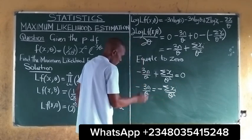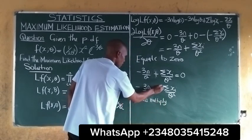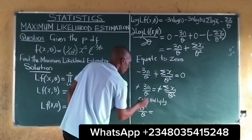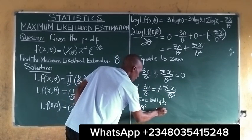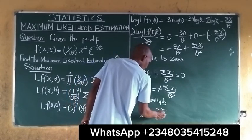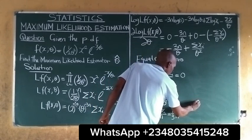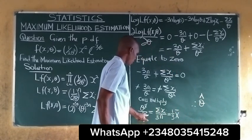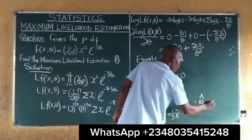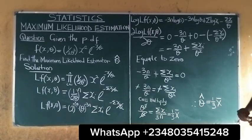The next thing to do is to cross multiply. Cross multiplying, theta squared over theta cancels to give theta on the left, and summation of xi all over 3n on the right. This simplifies further, and we know this is also equal to 1 over 3 times x-bar. Therefore our theta estimate is equal to 1 over 3 times x-bar. We have succeeded in obtaining the estimator for the given PDF.